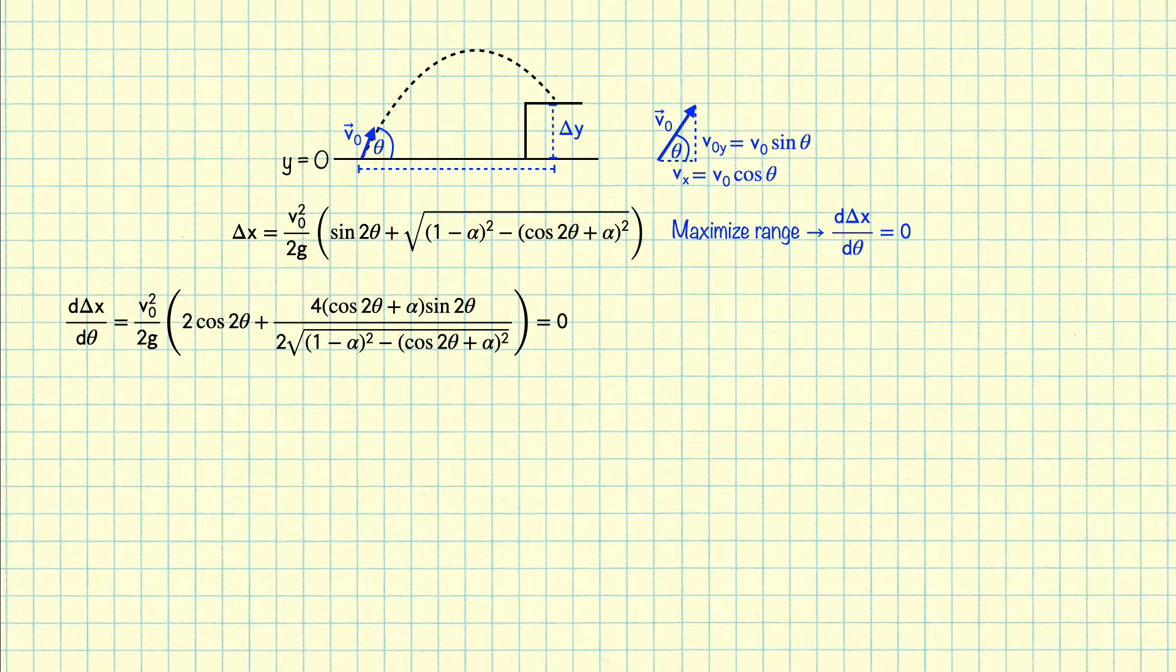So taking a derivative with respect to theta gives us the following expression. I can divide out the term v naught squared over 2g, and I can also divide the whole thing by 2. Now on the second term I have this ugly square root in the denominator, so I want to get rid of that, so I'm going to multiply everything by the square root, and I'm going to bring this second term, which used to have the square root in the denominator, over to the right-hand side of the equation. Next, I'm going to square both sides to get rid of the square root.